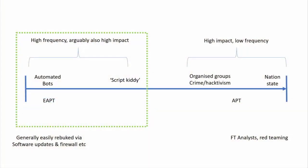Linux attacks are on a spectrum. On the right-hand side there's nation state and advanced hacktivist groups. On the left-hand side are automated bots, and in the middle are script kiddies. This talk is about the left-hand side — the automated bots and, more interestingly, the script kiddies. They mount attacks against our customers that run up loads of Azure credit, land customers with massive bills, steal data, and attack other customers. I call this EAPT — Extremely Annoying Persistent Threats.